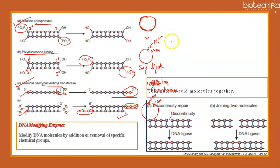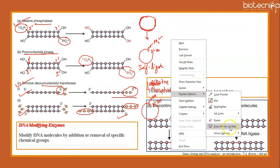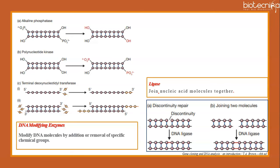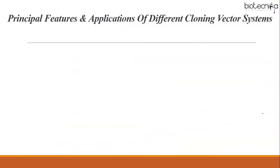DNA ligase is the enzyme needed to join nucleic acid molecules together. During replication, it repairs discontinuities by forming phosphodiester bonds. In recombinant DNA technology, it joins the DNA fragment carrying the gene of interest to the vector molecule.